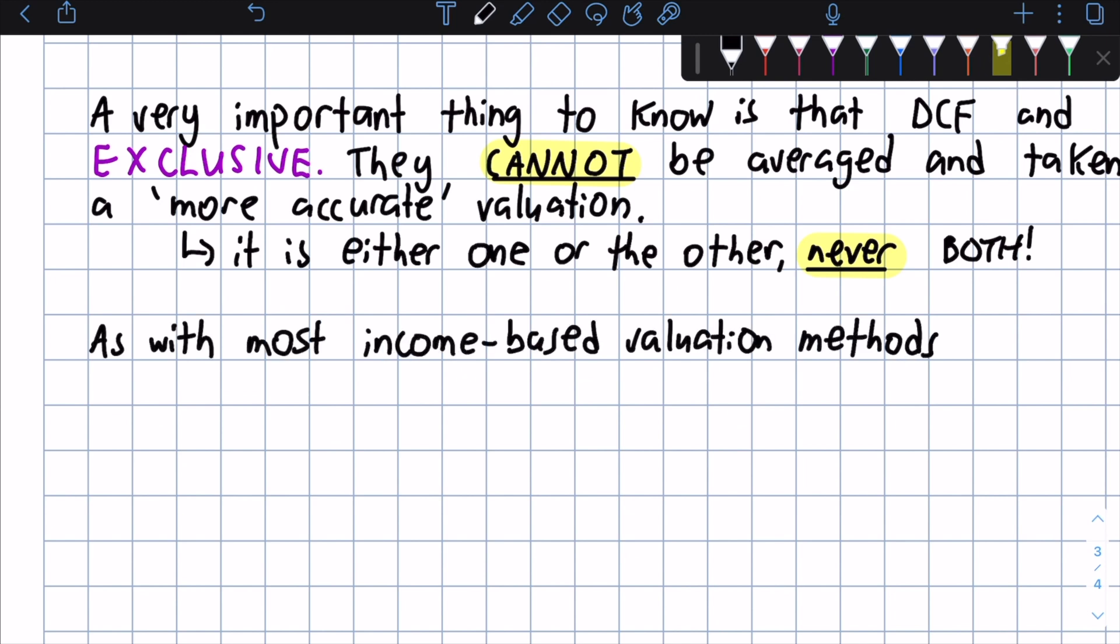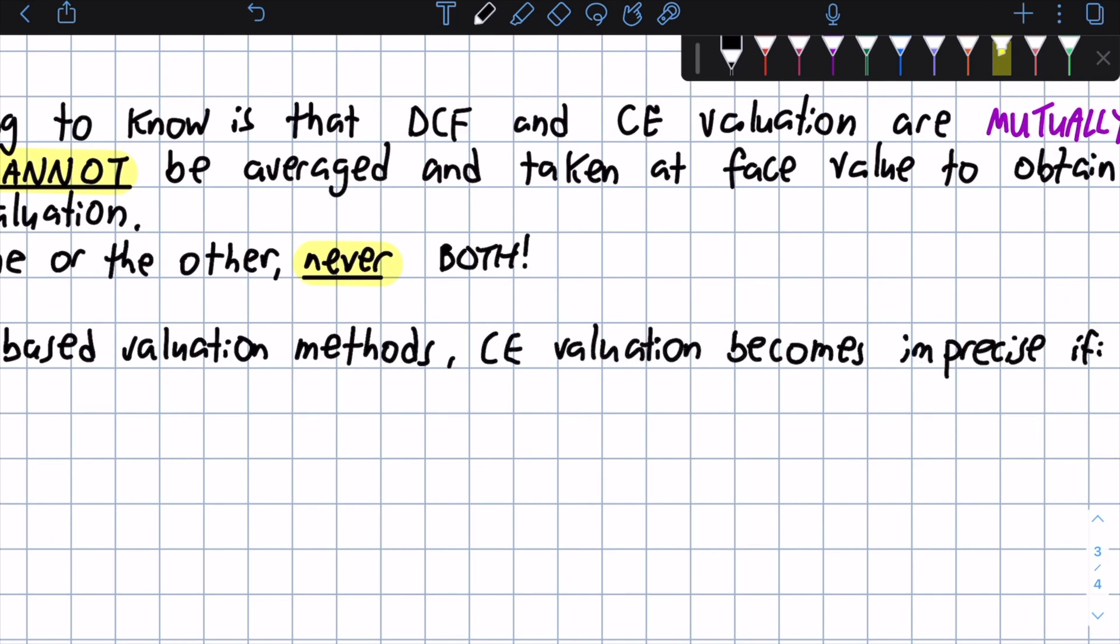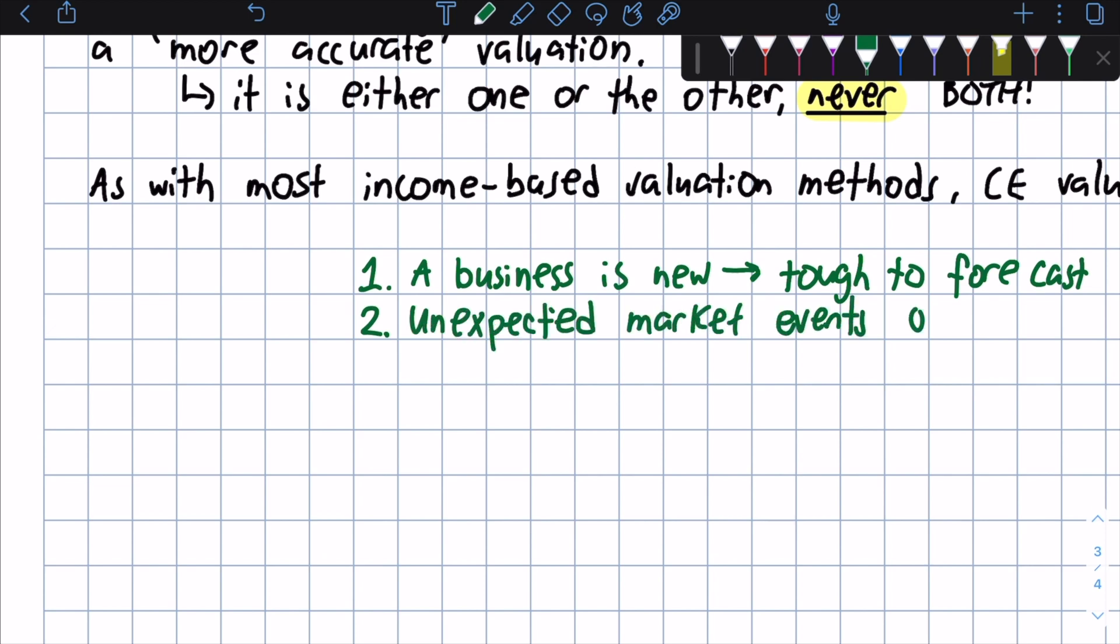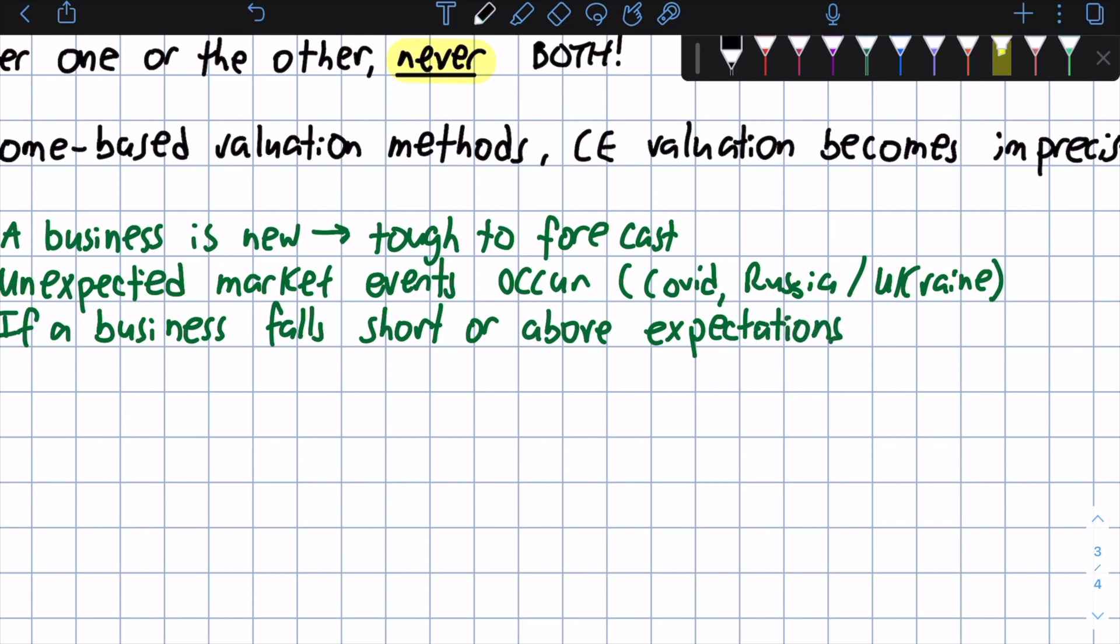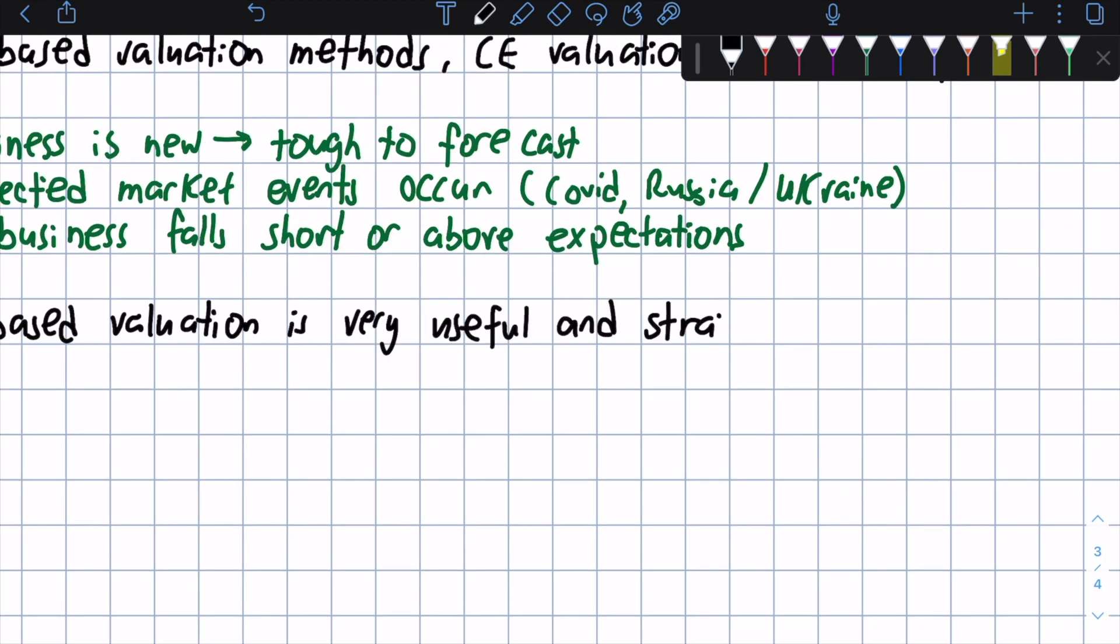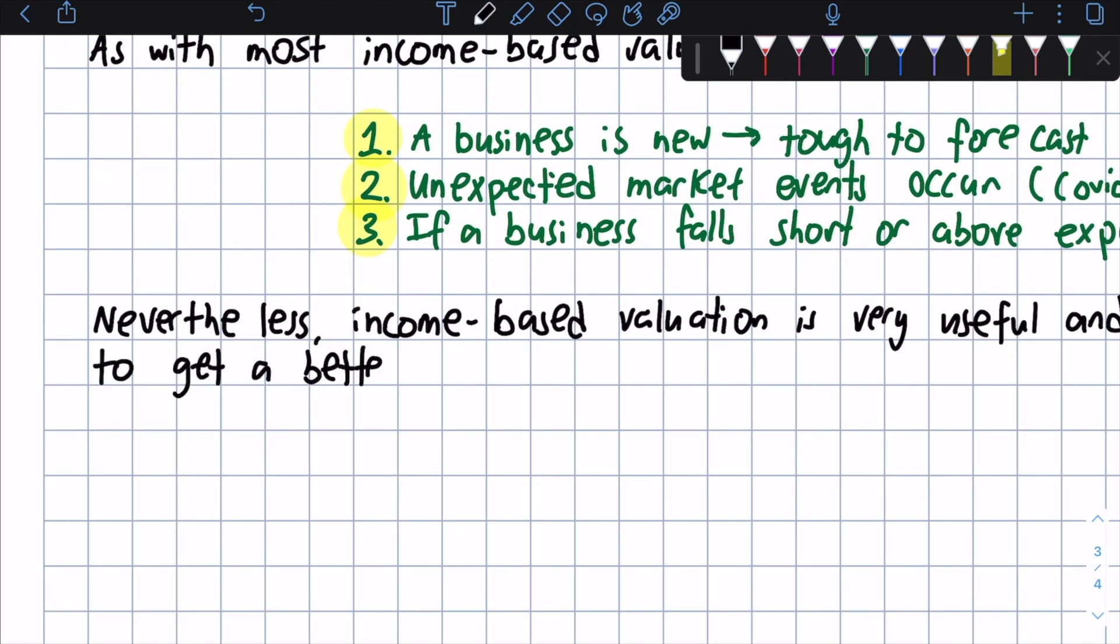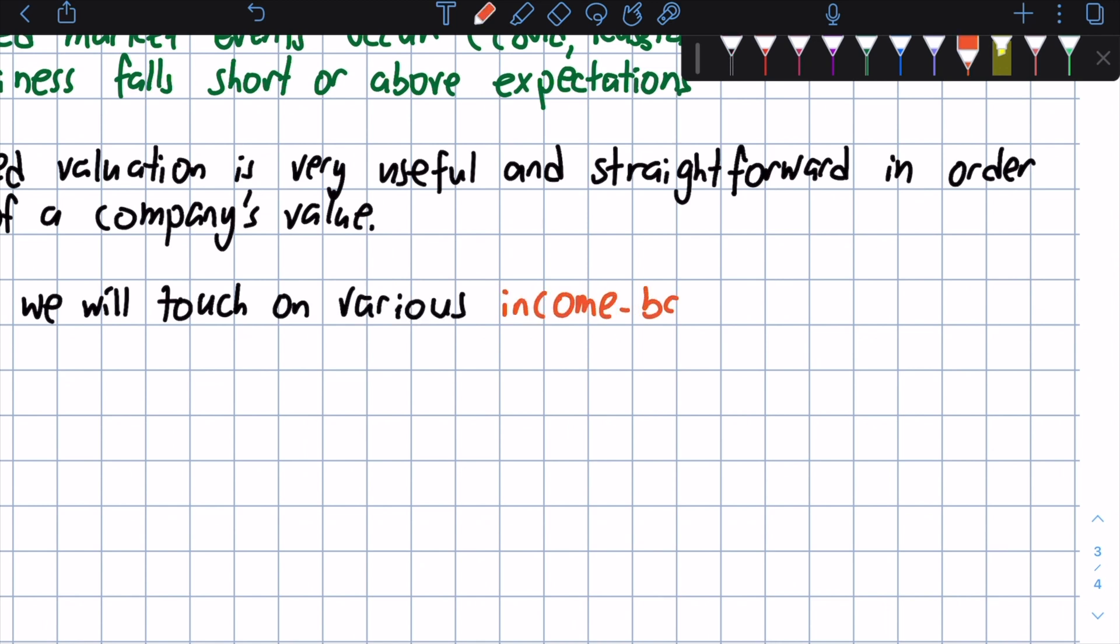And as with most income-based valuation methods, CE valuation becomes more imprecise and less reliable if, first of all, a business is new or just starting out, so it's tough to forecast cash flows, when there's an unexpected market event such as COVID or the Russia-Ukraine conflict, or if a business falls short or goes above expectations of future cash flows and growth. Nevertheless, income-based valuation is very useful and straightforward in order to get a better idea of a company's true value. In the next few videos, we'll touch on various income-based, relative, and option-based valuation methods. So I will see you all then.